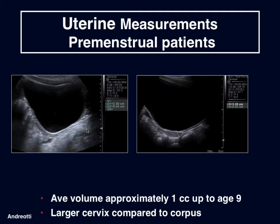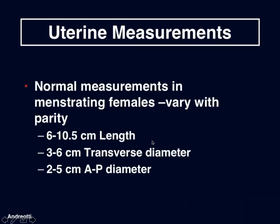What are the uterine measurements? In the premenarchal patient, the average volume is approximately 1 cubic centimeter up to about age 9, and the cervix is often seen to be larger than the corpus. For patients in the menstruating age group, measurements vary with parity and range from about 6 to 10.5 centimeters in length, 3 to 6 centimeters in transverse diameter, and 2 to 5 centimeters in AP diameter. The normal measurements in postmenopausal females are a bit smaller: 3.5 to 7.5 centimeters in length, 2 to 4 centimeters in transverse diameter, and 1.7 to 3.3 centimeters in AP diameter.